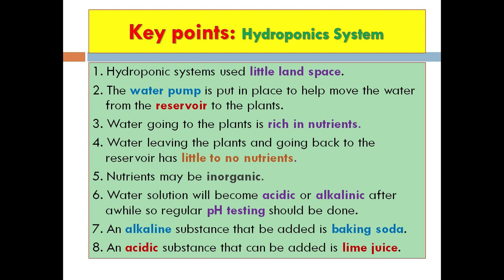Number five, nutrients may be inorganic — inorganic fertilizers are used in this system; number six, the water solution will become acidic or alkaline after a while, so regular pH testing should be done; number seven, an alkaline substance that can be added is baking soda — if your water is acidic, add baking soda to neutralize it; number eight, an acidic substance that can be added is lime water — if your water gets too alkaline, add lime water to balance the pH.